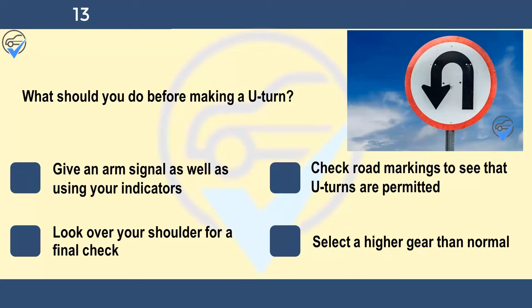What should you do before making a U-turn? Give an arm signal as well as using your indicators, check road markings to see that U-turns are permitted, look over your shoulder for a final check, or select a higher gear than normal. If you have to make a U-turn, slow down and ensure that the road is clear in both directions. Make sure that the road is wide enough for you to carry out the manoeuvre safely.